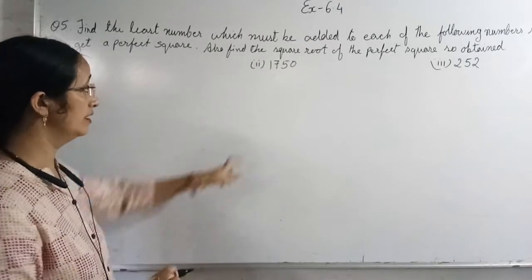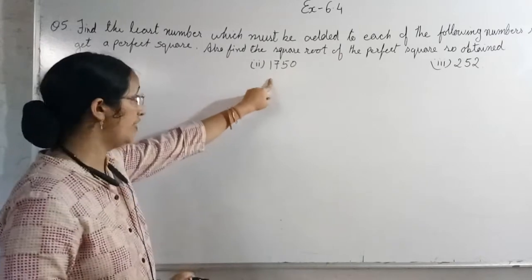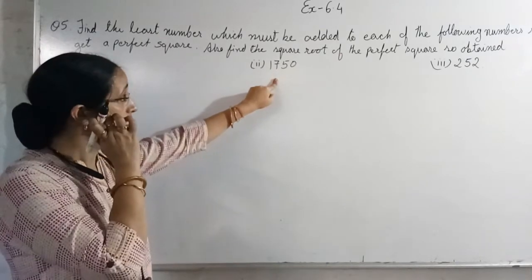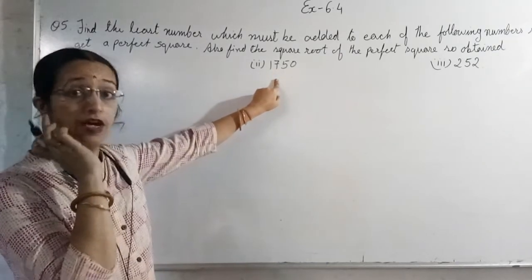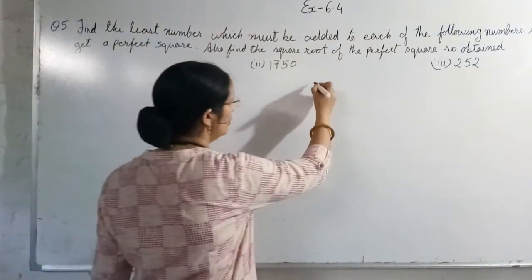Students, again we have the second part of the same question number 5. Now here they are telling us it is not a perfect square, so we have to add some number. To find that, we will do long division method.